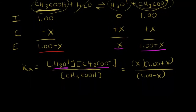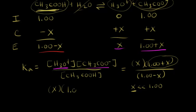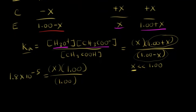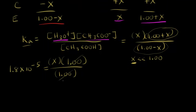We're going to make the same assumption that we've done before: that concentration x is much, much smaller than one. If that's a really small number, 1 plus x is pretty much the same as one, and 1 minus x is also pretty much the same as one. So we can approximate and say 1 plus x is approximately equal to one, and 1 minus x is also approximately equal to one. This is all equal to the Ka value, which for acetic acid is 1.8 times 10 to the negative five.